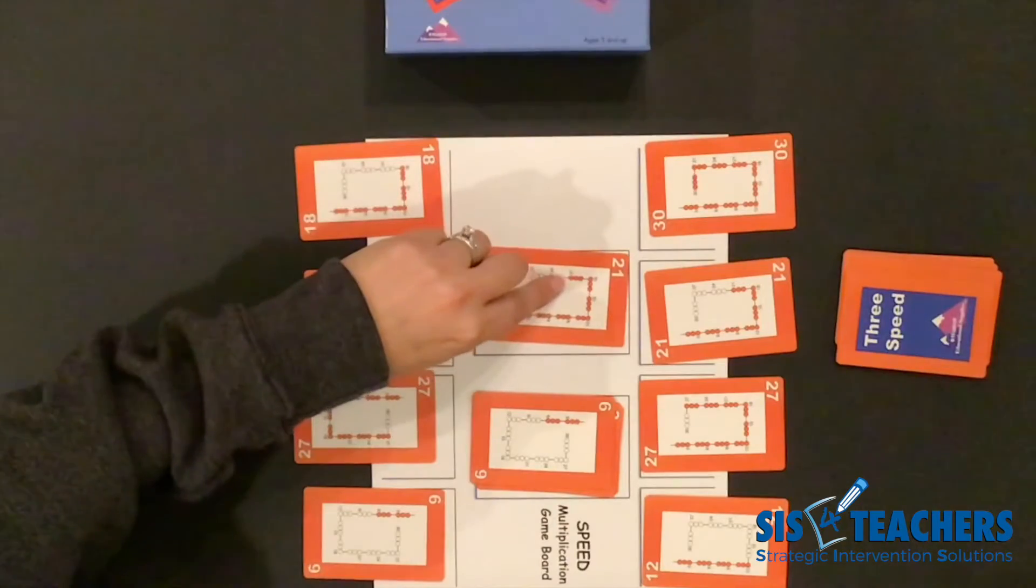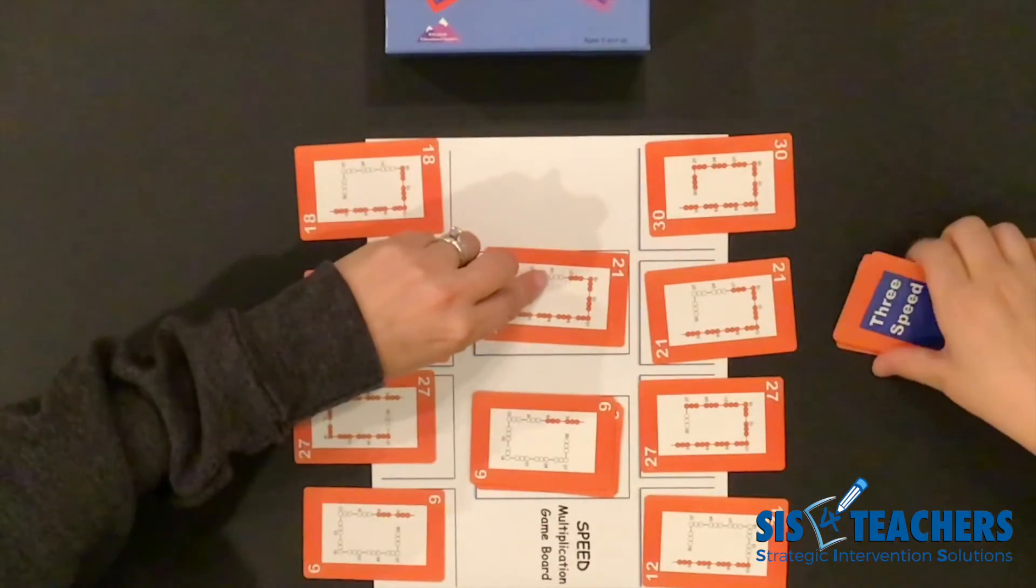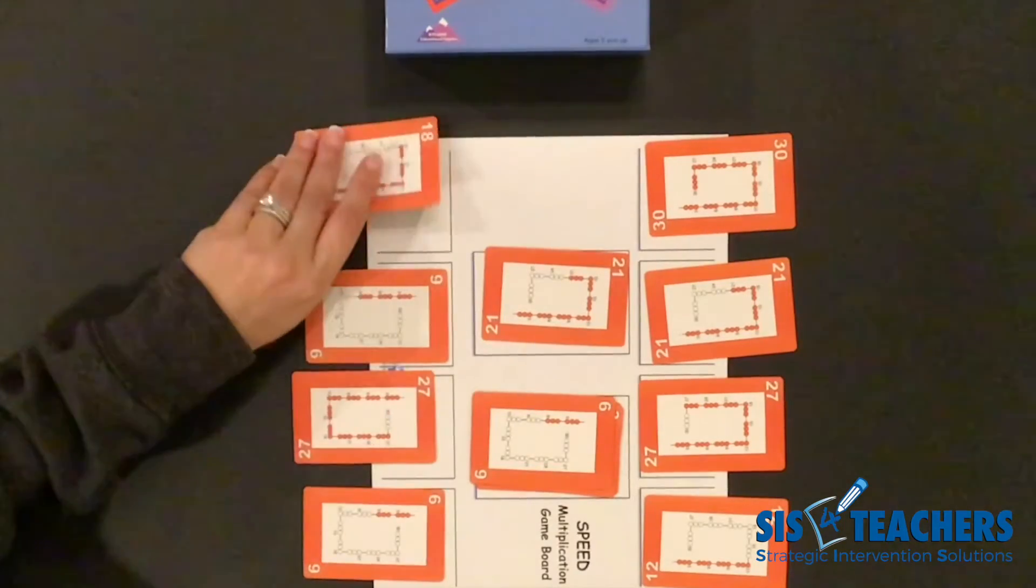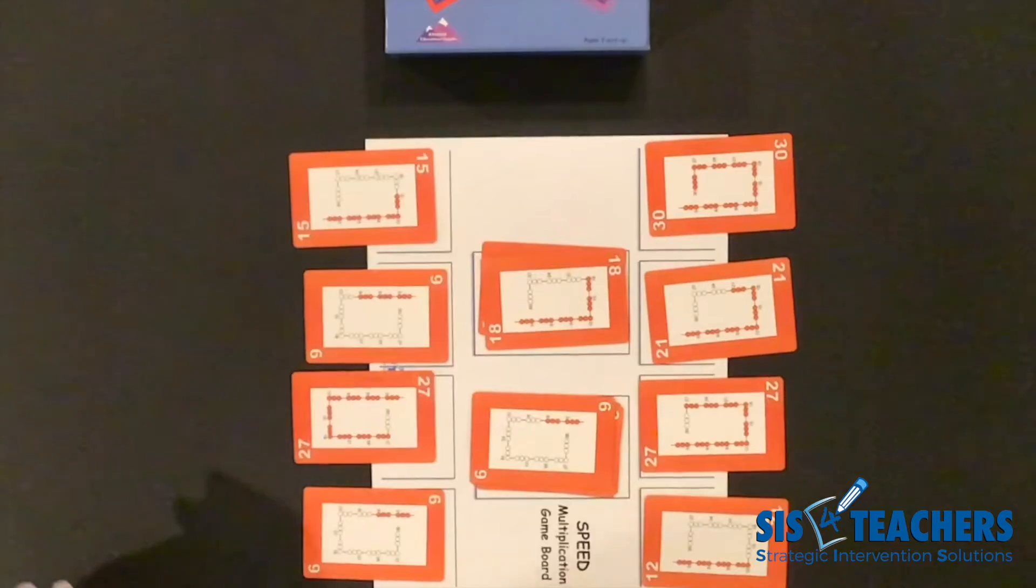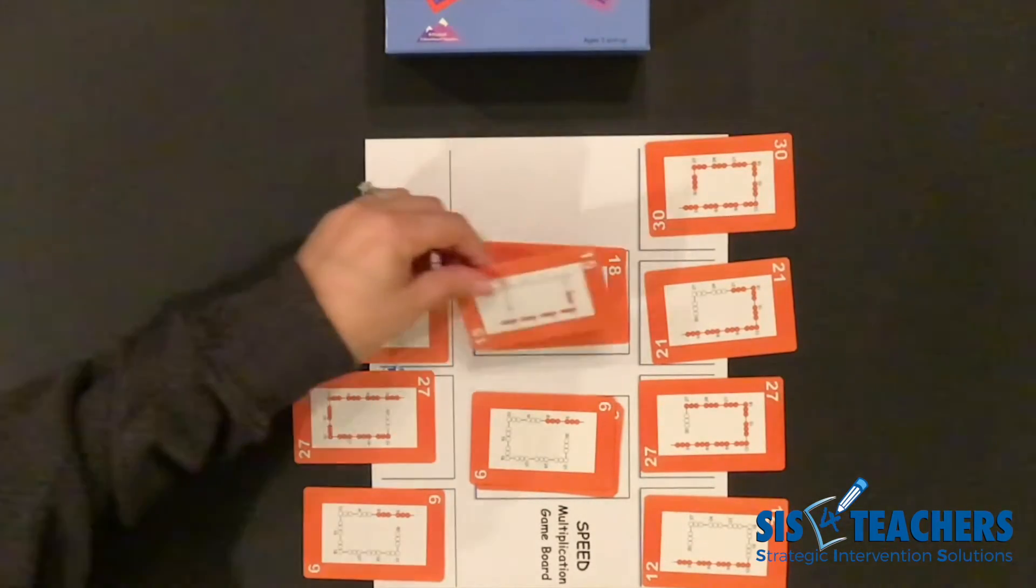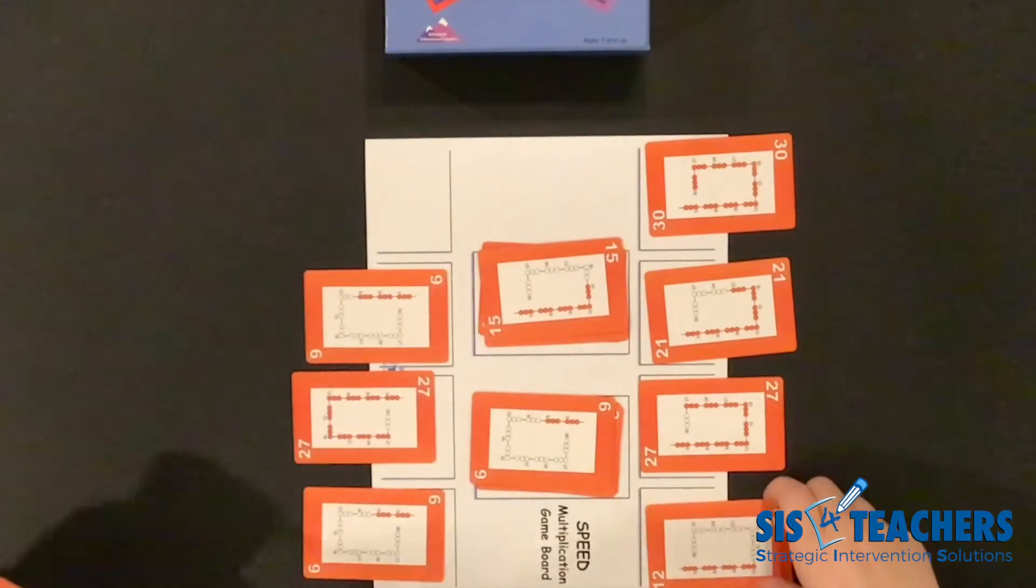If people get stuck, they can always look at the cards to see, okay, if I have 21, I can go up to 24 or back to 18. So in this case, I can go ahead and go back to 18. I know that if I go back again, I can go to 15. My partner can look to see if they can go up or down.